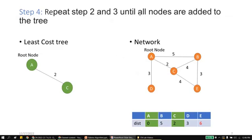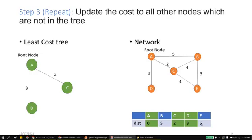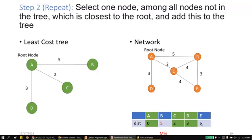Repeat Steps 2 and 3 until all nodes are added to the tree. The next minimum value after 2 is 3, so we add node D. Hypothetically, if D to E were connected with cost 1, then A to E via D would be 3 plus 1 equals 4, replacing the current value of 6. But that is not the case here, so we keep 6. Next, we add B with cost 5. For E, we check if going via B is shorter: 5 plus 3 equals 8, which is greater than 6. So we keep 6 as the shortest path to E — that is, 2 plus 4 equals 6.